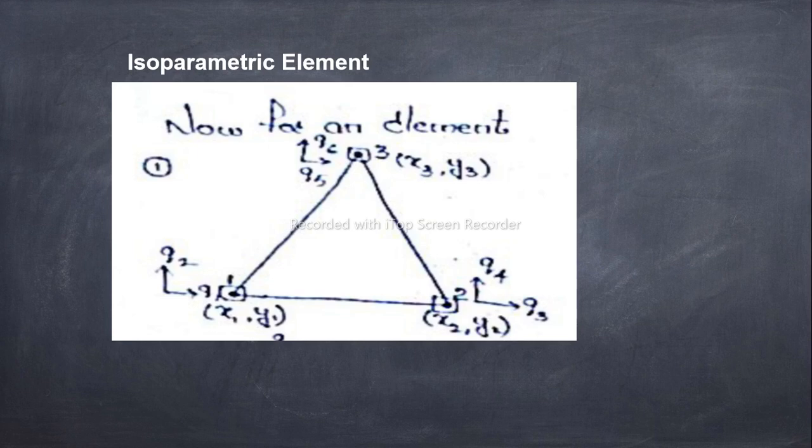In general, this type of element is used when there is a curved shape where a straight line cannot be adapted. In that case, the isoparametric element will be used.